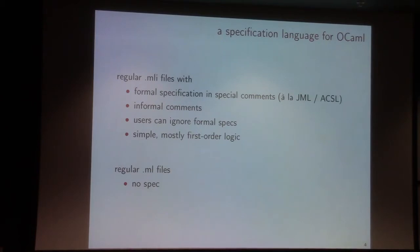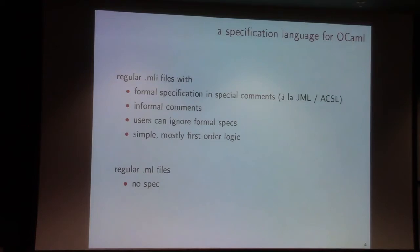We are going to use this specification language — we are going to write elements of this specification language inside .mli files, the OCaml interface files. This formal specification language will be something like JML for the Java language and CSL for the C language, because we don't fix a particular tool to read and treat these specification elements. The idea is to use this specification language to give some proof dimension to the types and function types declared in these interface files.